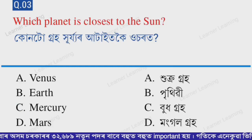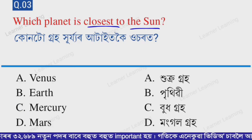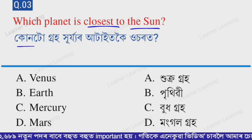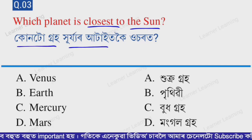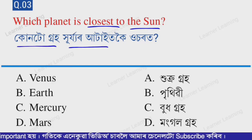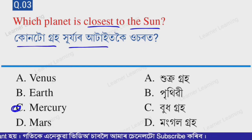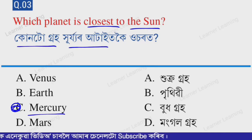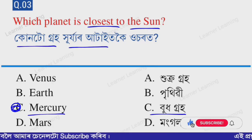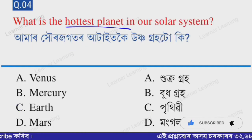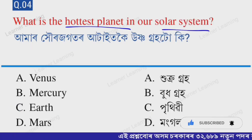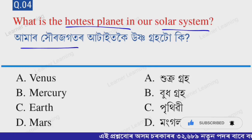Next question: Which planet is known as the red planet? Next question: Which planet is closest to the sun? Select from the options. Option C — Mercury. Mercury (Budh graho) is the planet closest to the sun in our solar system.